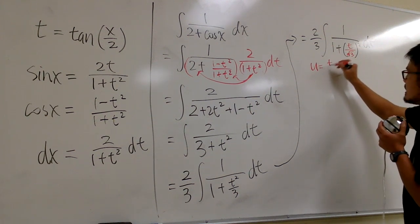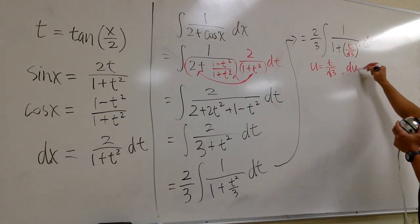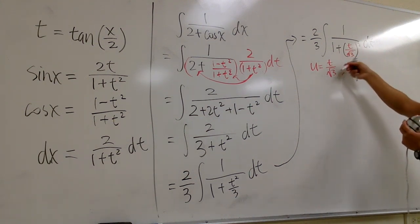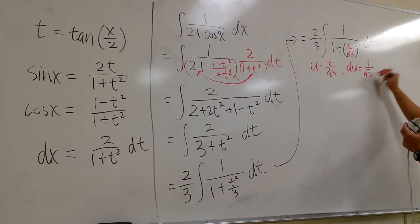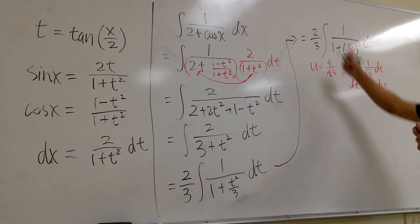And the purpose of this is that we can now use u sub. Let u is equal to t over square root of 3. And then you see, du will be pretty much the derivative. This is just 1 over square root of 3, dt, right? And then you can multiply both sides by square root of 3. So, dt is equal to square root of 3, du.